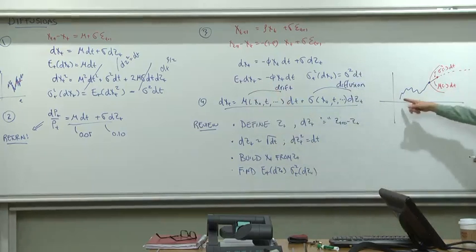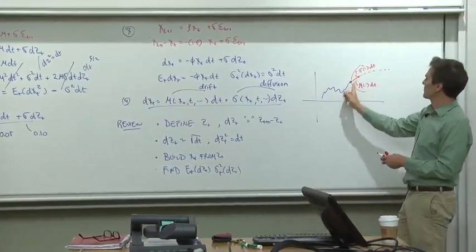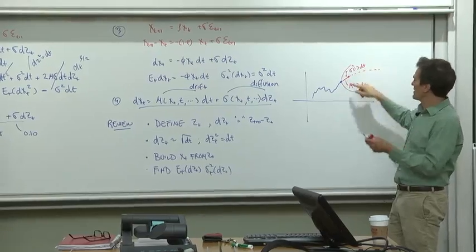For example, here's a diffusion, a more general diffusion. The mu term allows you to control the drift. Where on average do you think things are going to go? And in a different state of the world, the drift might be pointing in a different direction if x were different.